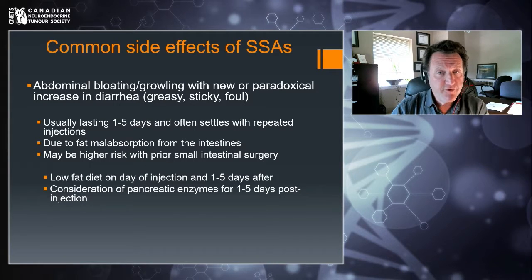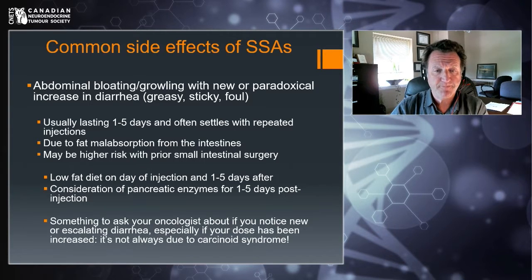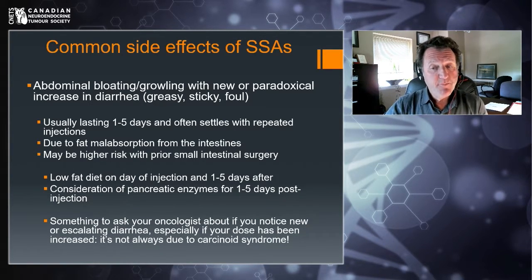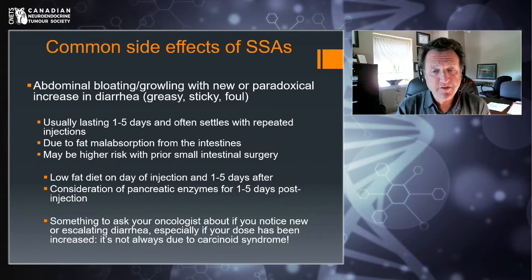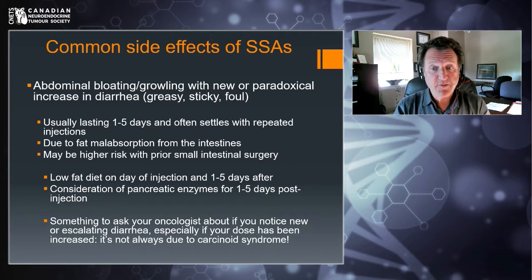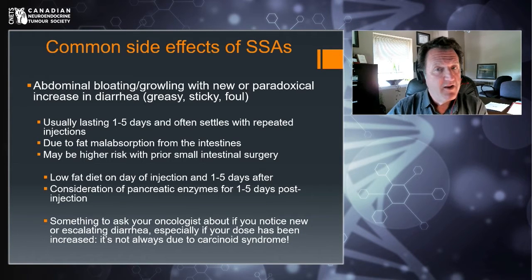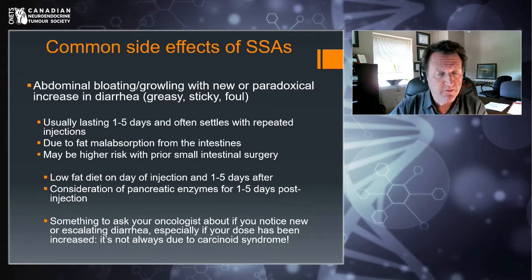Something to consider and discuss if abdominal bloating and diarrhea become an escalating problem. Very importantly, the abdominal bloating and growling can come with increasing diarrhea, and if you have carcinoid syndrome you may think that's your syndrome getting worse — or your oncologist may think that. Not always the case. Sometimes it's from the treatment. So always be aware of that distinction.